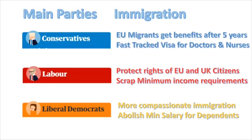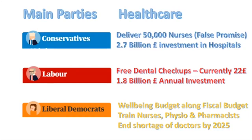From an immigration perspective, Conservatives want to restrict EU migrant benefits to after 5 years — an important policy that would naturally reduce EU migration since people wouldn't receive benefits from day one. They are also planning a fast-track visa scheme. Labour and the Liberal Democrats are both promising to scrap the minimum income requirement for bringing dependents into the country, which is currently quite restrictive. Overall, Conservatives appear to be the clearer leader on immigration policy.